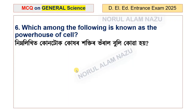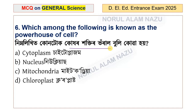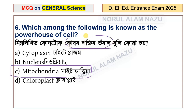Question number 6: Which among the following is known as the powerhouse of the cell? The options are cytoplasm, nucleus, mitochondria, and chloroplast. The answer is mitochondria. Mitochondria is known as the powerhouse of the cell.